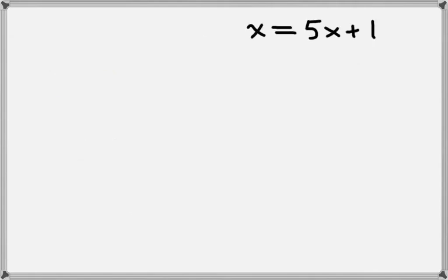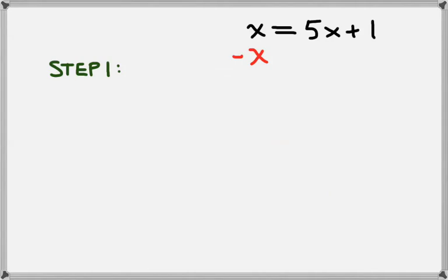Now let's look at x equals 5x plus 1. Our first step is to combine the x terms, so what we're going to do is subtract x from the left hand side. We could have subtracted 5x from the right hand side, but that would have given us a negative 4x. I chose to do it this way so that we didn't end up with a negative. Since we subtracted x from the left hand side, we also need to subtract x from the right hand side.